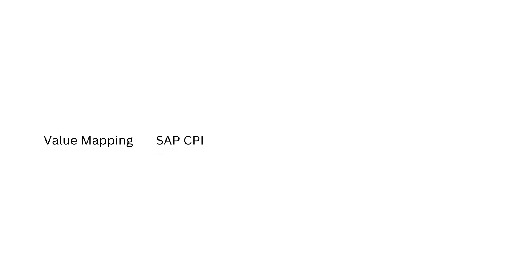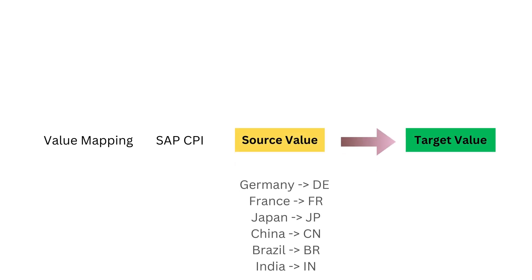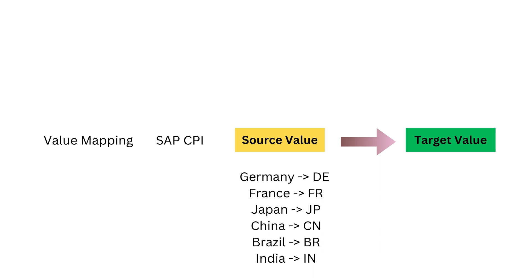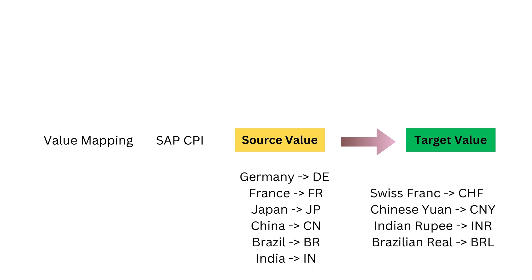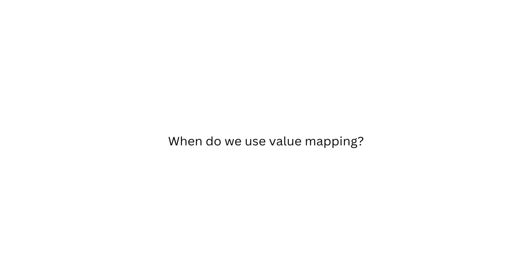Value mapping is one of the key features in SAP CPI that will help you to translate source values into the target value in your integration process. Value mapping in SAP CPI is a method used to maintain a relationship between different values that represent the same data objects across various systems. Technically, it acts as a bi-directional lookup table allowing for consistent data transformation during integration. Let's talk about when we use value mapping.